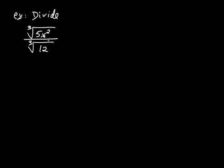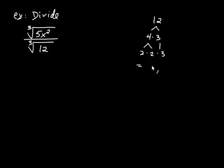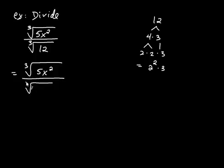Let's say we want to divide: we have the cube root of 5x squared divided by the cube root of 12. The cube root of 12 — 12 is not a particularly large number, but let's use the technique anyway. So you take 12 and write it as 4 times 3, and 4 is 2 times 2, and 3 is prime. So let's write that as 2 squared multiplied by 3. The numerator remains the same — it's still the cube root of 5x squared — but the denominator is now the cube root of 2 squared multiplied by 3.